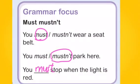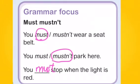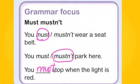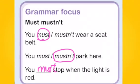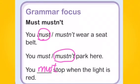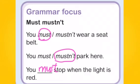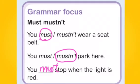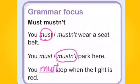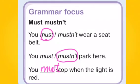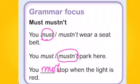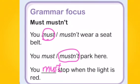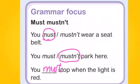Here we're going to learn how to use must or mustn't correctly. Must — if it's something good, something you should do, something correct that you should follow, then you use must. Mustn't — something that's bad, not good, something wrong that you shouldn't do. So: you must wear a seatbelt. You mustn't park here. You must stop when the traffic light is red.